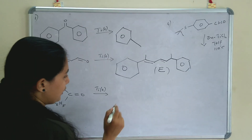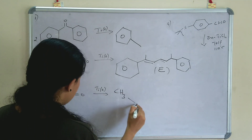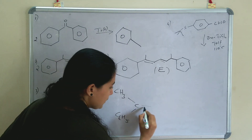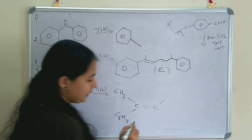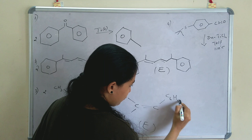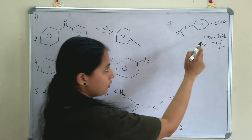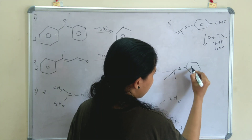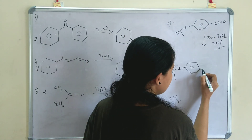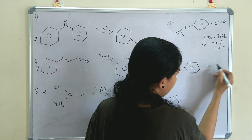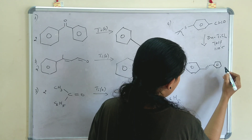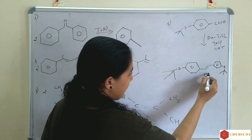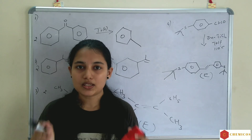In the third example, E-alkene will also be formed. We put C₆H₅ on one side and CH₃ on the other side — so E-alkene is formed. In the fourth example, an aldehyde is given, and the product will have a benzene ring where C=O is replaced by C=C. Here also E-alkene is formed. So in McMurry coupling, the major product will be E-alkene.